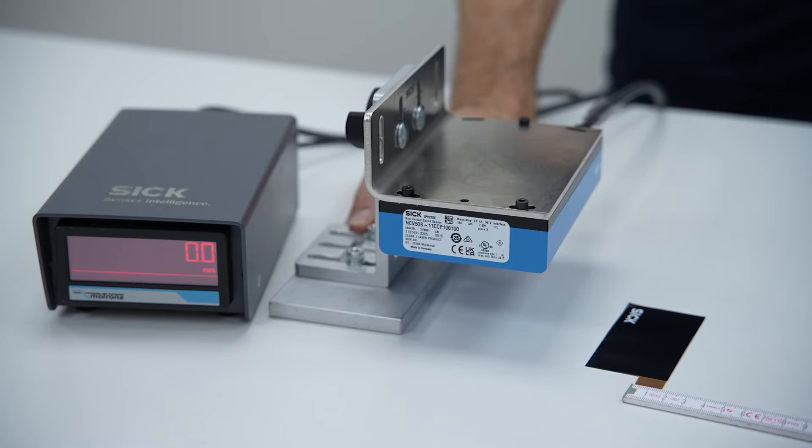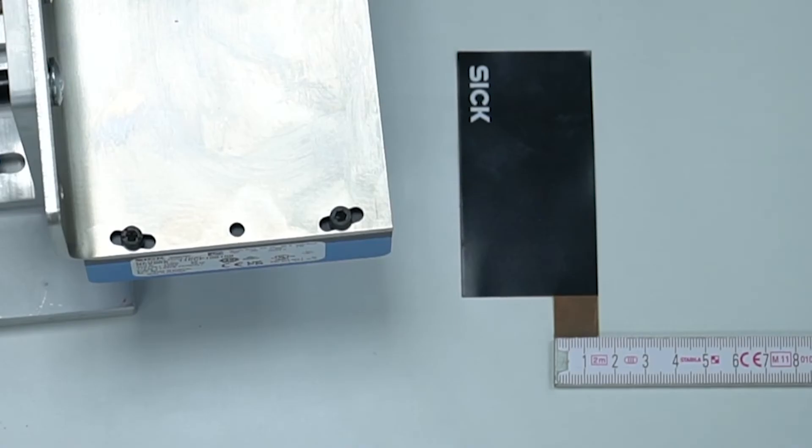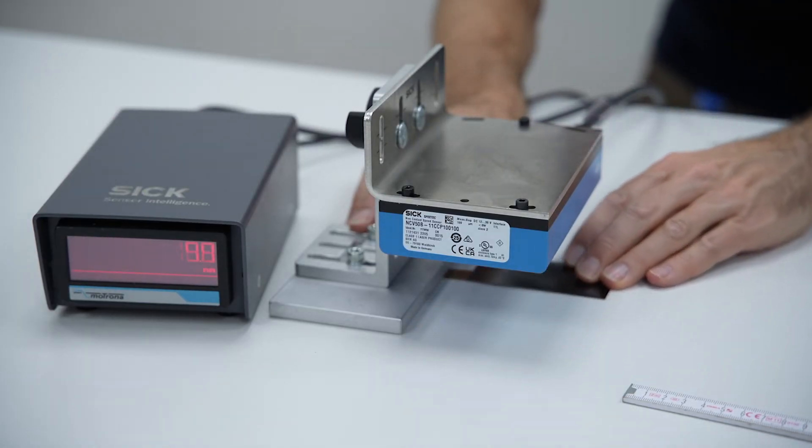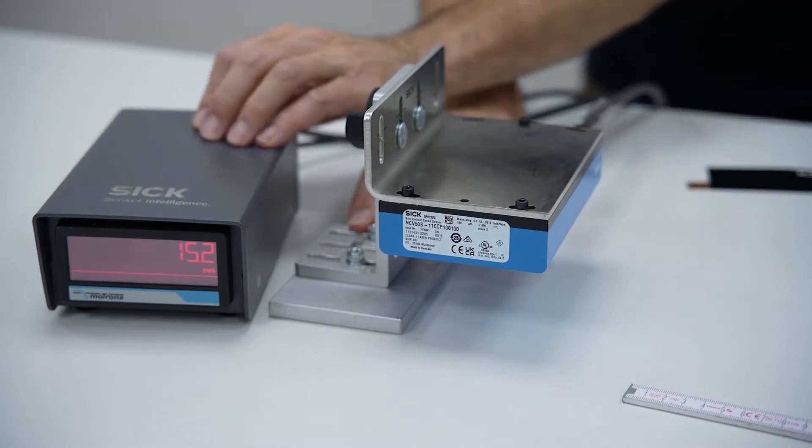SPEETEC can also measure the length of electrode tabs. In this example, the tab is about 15mm long. We will measure the length of the tab using SPEETEC. The measured length is 15.2mm.